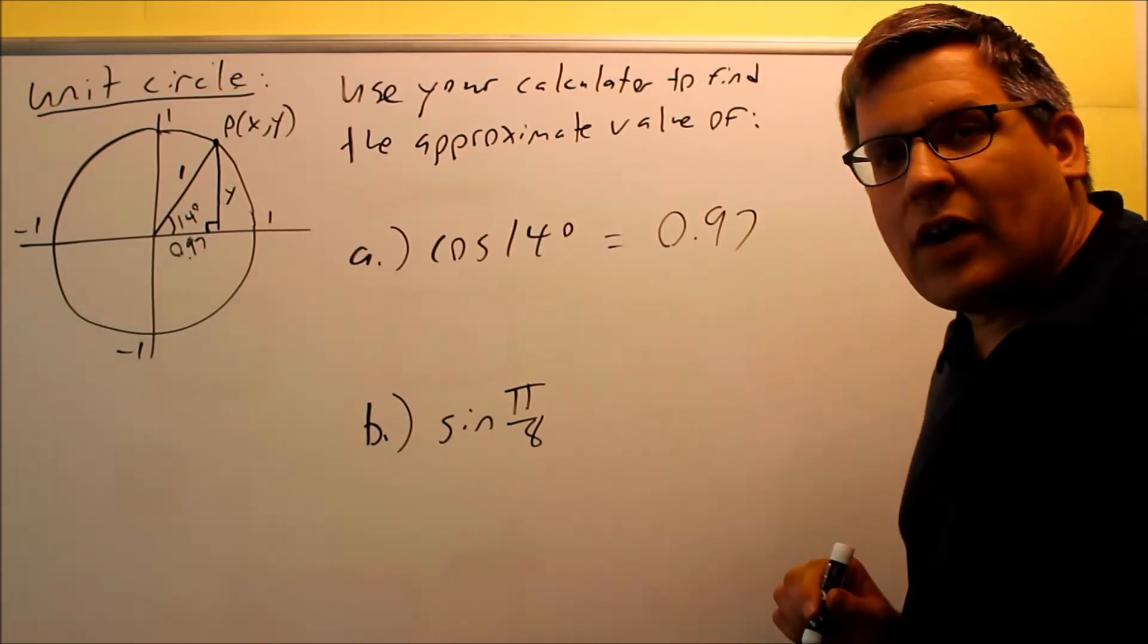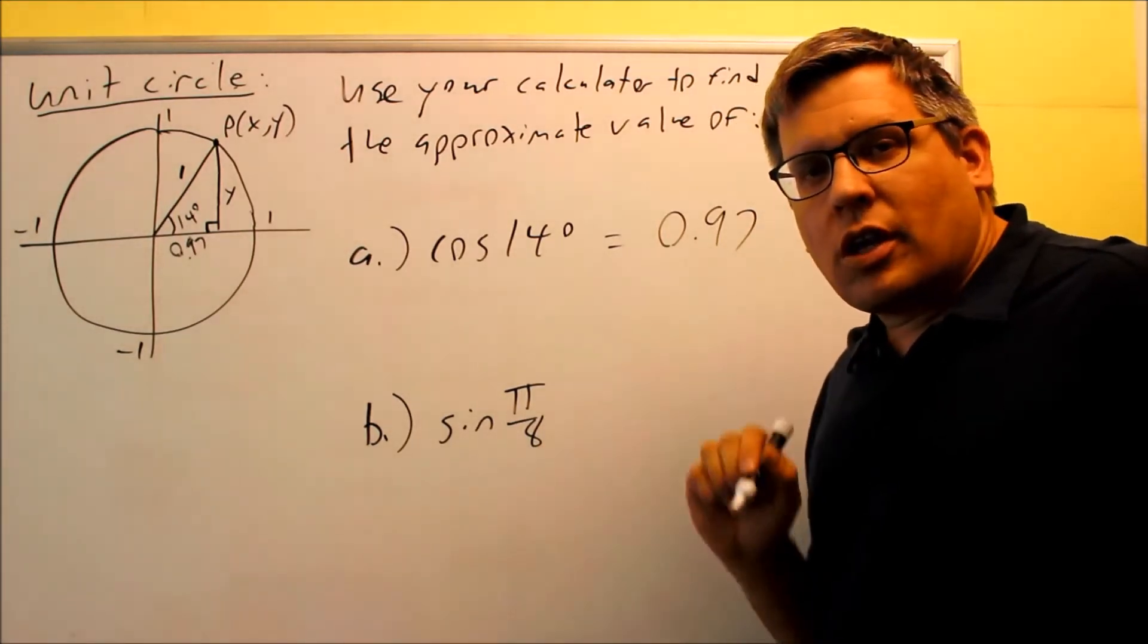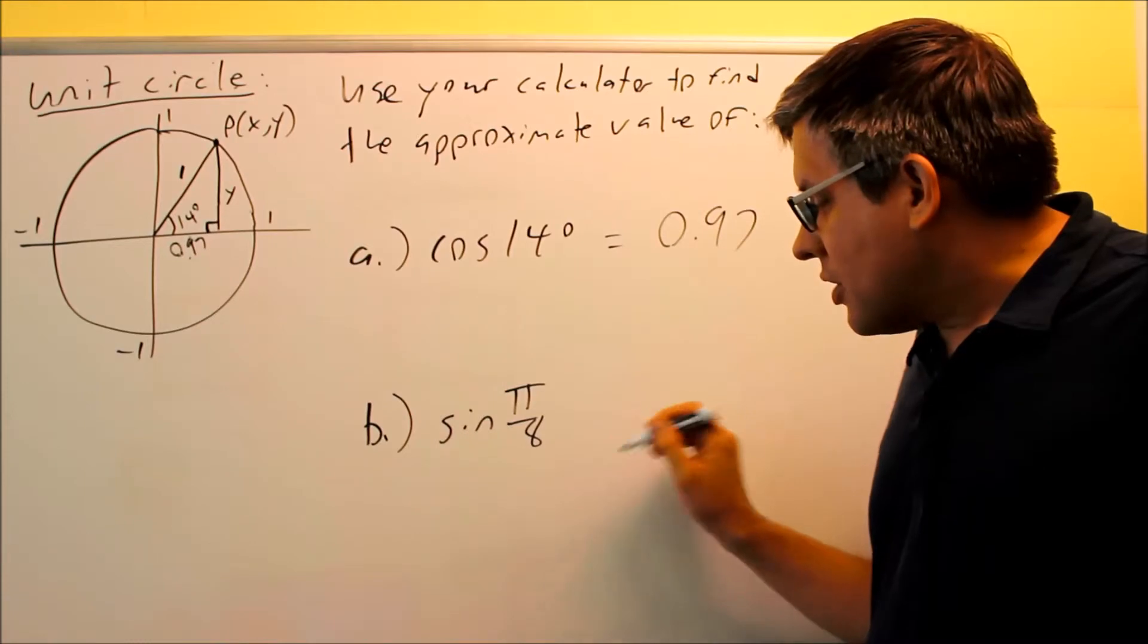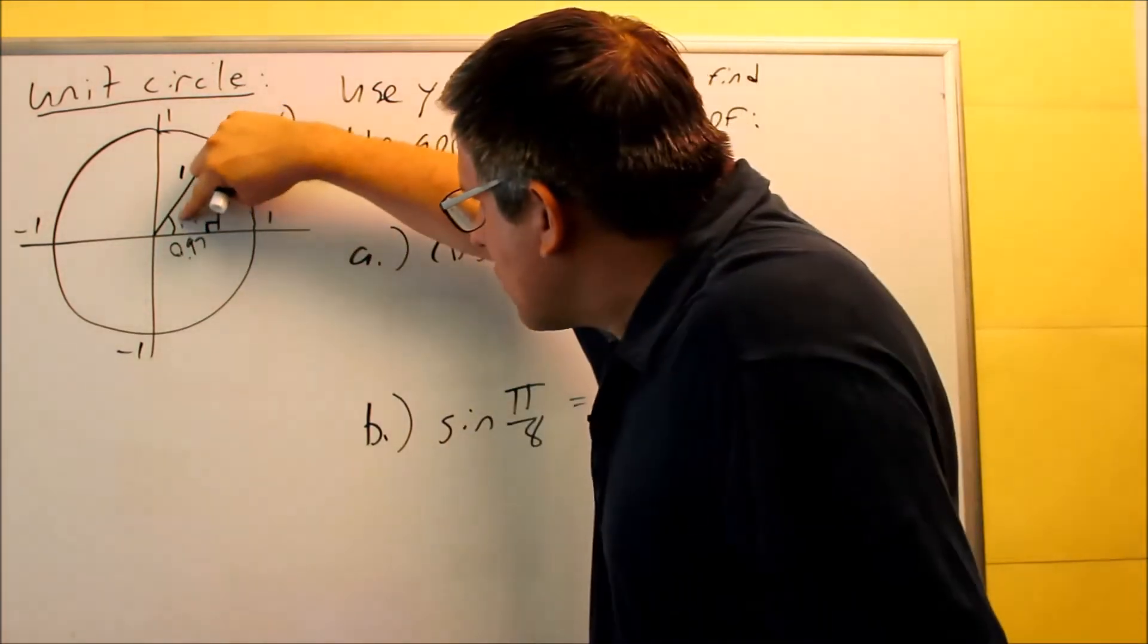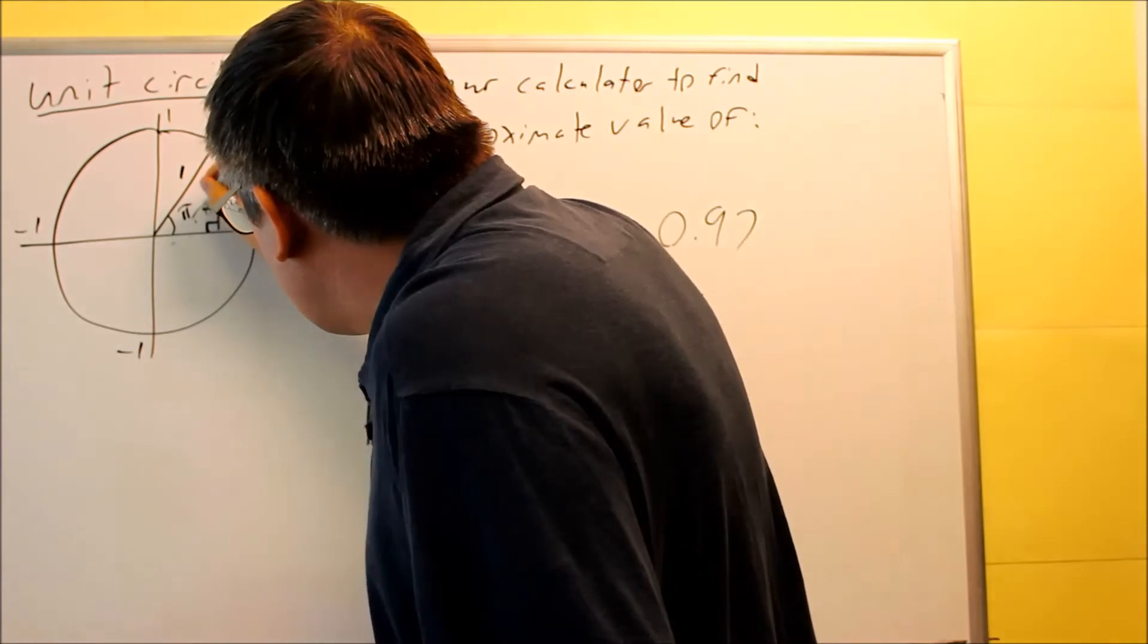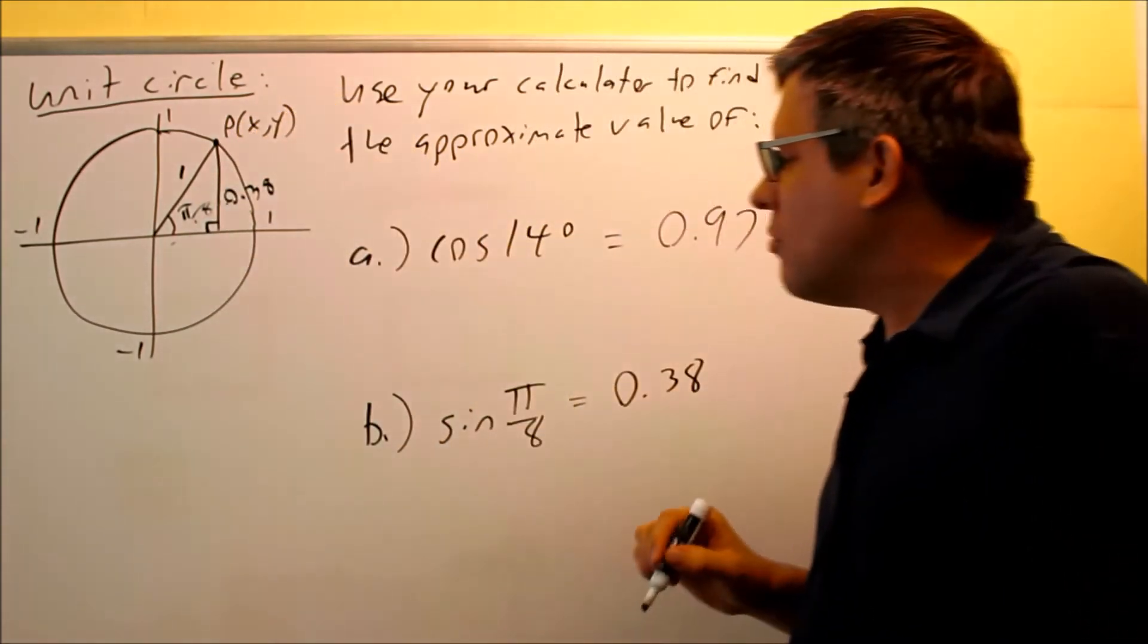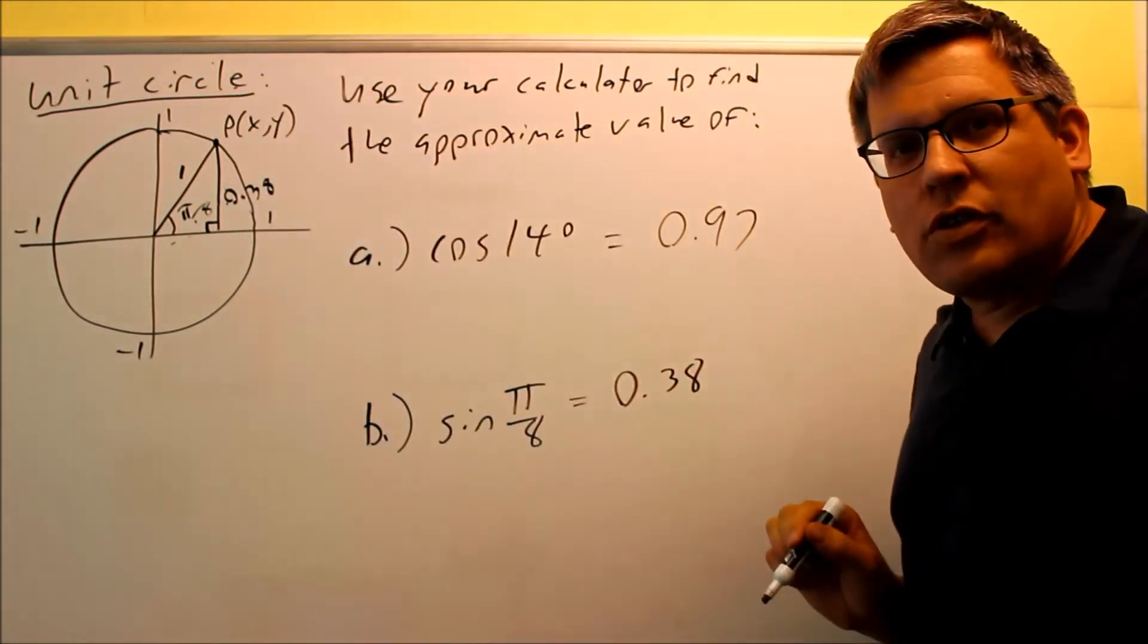Now we're going to do sine of π/8. To do this one, your calculator needs to be in radian mode. So again, you want to make sure your radians is highlighted if you have a graphing calculator, or make sure you have an RAD or an R at the top of your scientific calculator. You're going to get 0.38. So what that means is if I put this angle in here, π divided by 8, that means that the y value here, that's how high this would be. This would be 0.38. That means when we do this in a calculator, sine is the y value. You get that value directly off of the triangle.